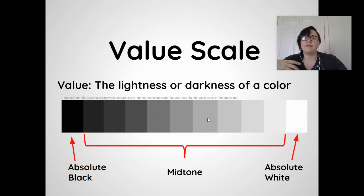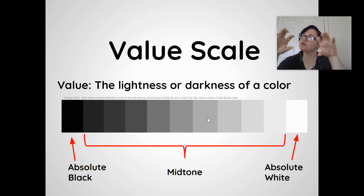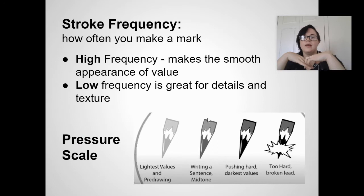With graphite, we're going to create value. Value is the relative lightness or darkness of a color. Looking at a value scale, we have absolute black, mid-tones — the gray tones that fall in between — and absolute white. How do you achieve absolute white on your paper? Simply don't shade that area in. The easiest way to create white is to leave it uncolored.